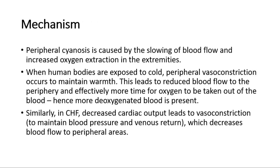For its mechanism, peripheral cyanosis is caused by the slowing of blood flow and increased oxygen extraction in the extremities. When human bodies are exposed to cold, peripheral vasoconstriction occurs to maintain warmth. This leads to reduced blood flow to the periphery and effectively more time for oxygen to be taken out of the blood, so more deoxygenated blood is present. Similarly, in congestive heart failure, decreased cardiac output leads to vasoconstriction to maintain blood pressure and venous return, which decreases blood flow to peripheral areas.